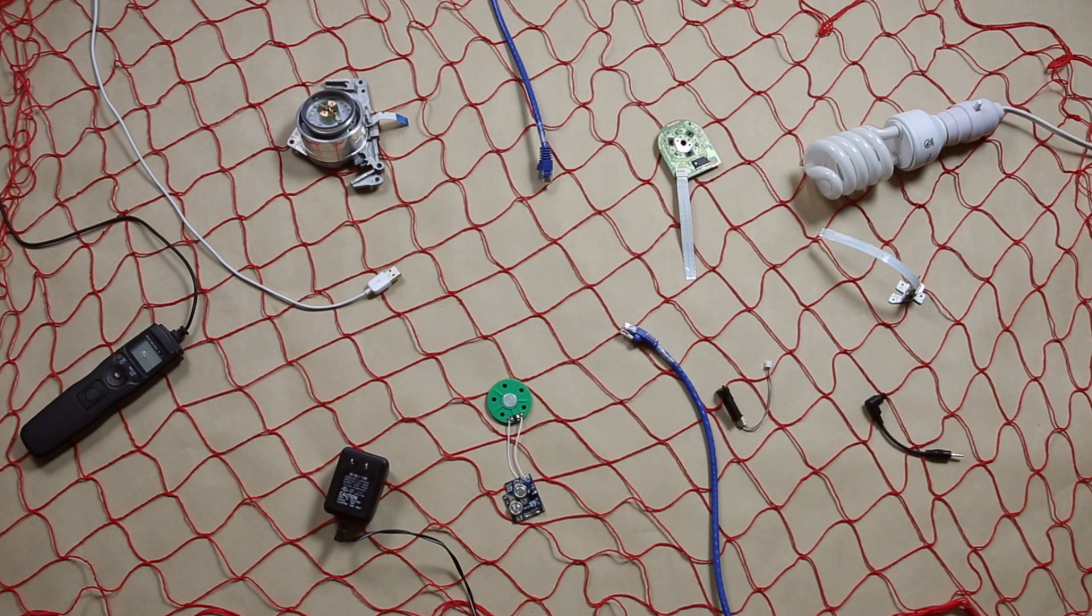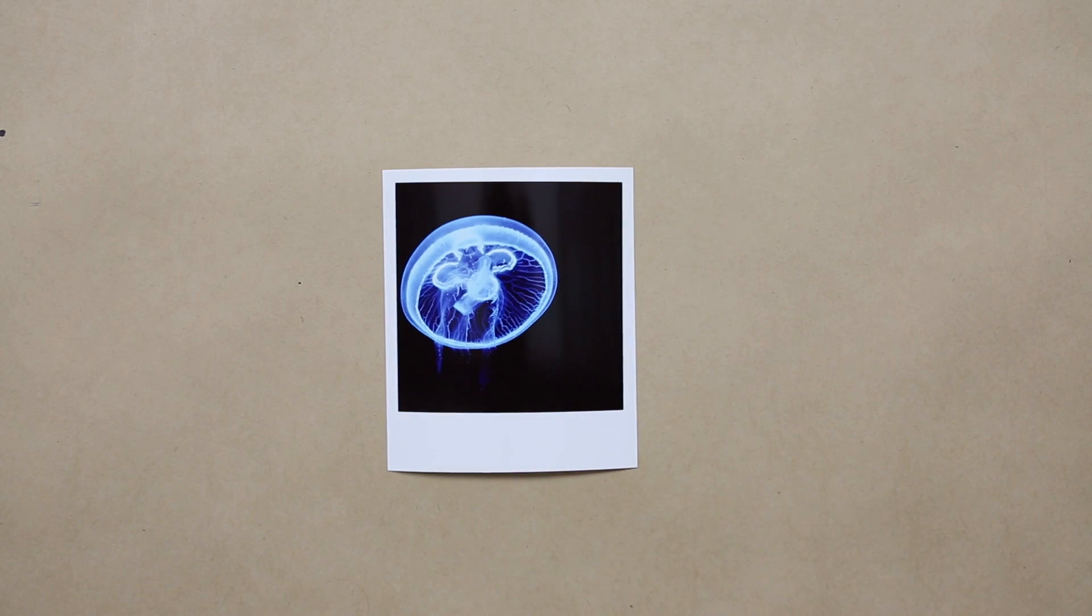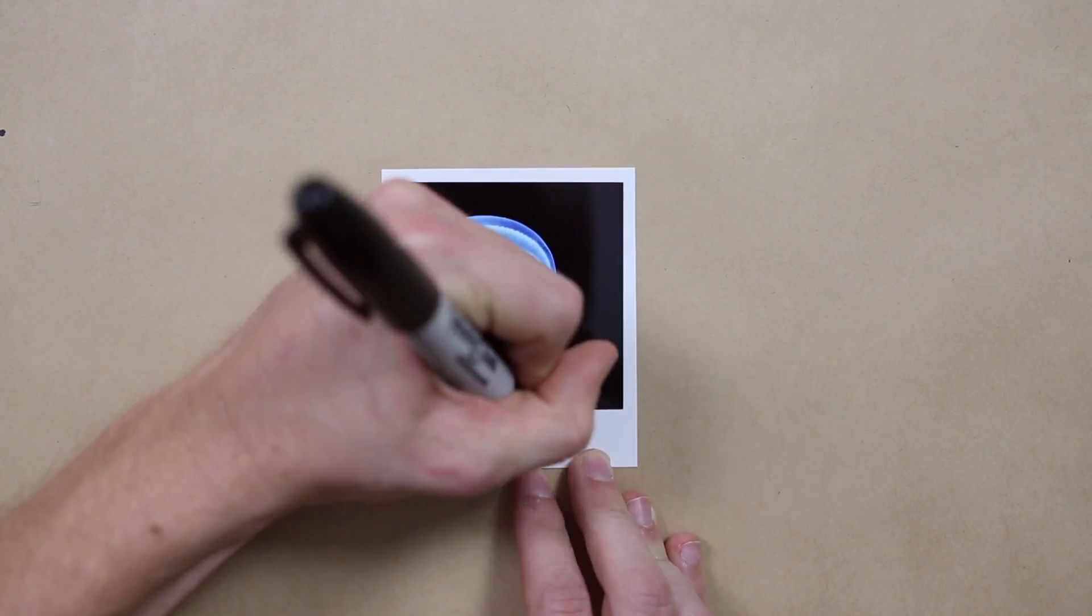So we're going to explain it using something else that's mysterious and maybe a little confusing, a jellyfish. Meet this moon jelly. We'll call him Charlie.